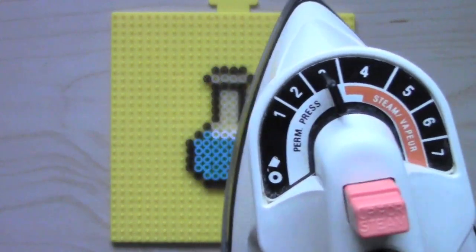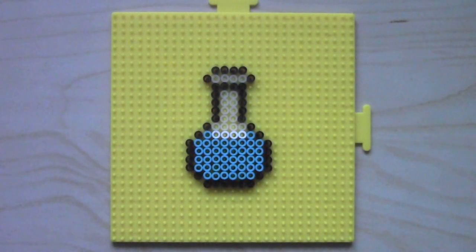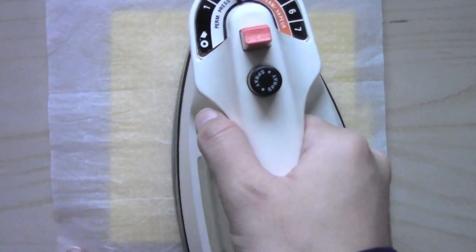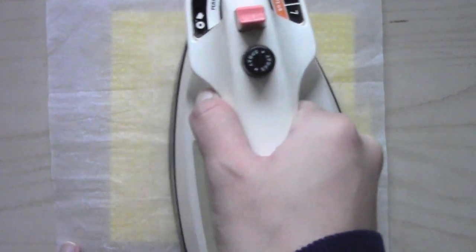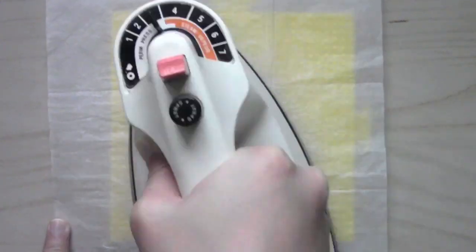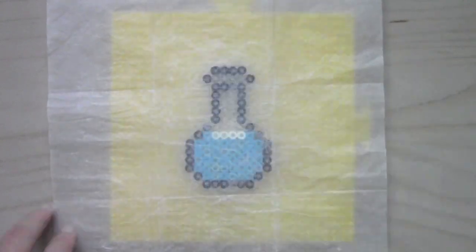To fuse the beads together, I have my iron set at three. And then I'm just going to place my parchment paper on top and iron it with circular motion and a little bit of pressure. I don't want to press too hard on it, otherwise it'll be too flat. And then once I'm finished fusing one side, you can see it all on the paper. I'm going to flip it over to the other side and do the exact same thing.